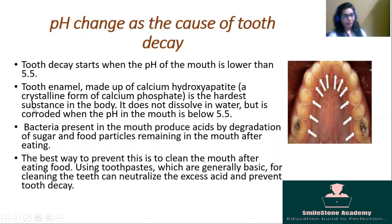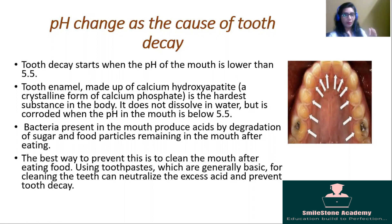Let us study more about that. Tooth enamel is made up of calcium hydroxyapatite, which is a crystalline form of calcium phosphate. So our tooth enamel is made of calcium phosphate, and this calcium phosphate is the hardest substance in the body. This calcium phosphate does not dissolve in water, but it is corroded when the pH in the mouth is below 5.5.